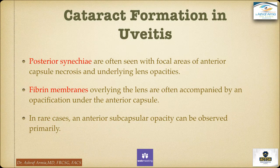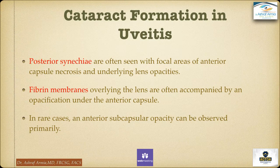In cataract formation in uveitis there are many things to deal with. Posterior synechiae are often seen with focal areas of anterior capsular necrosis and the underlying lens opacities. Fibrin membranes overlying the lens are often accompanied by opacification under the anterior capsule. In rare cases, an anterior subcapsular opacity can be observed primarily.